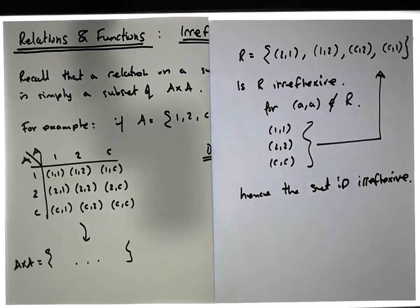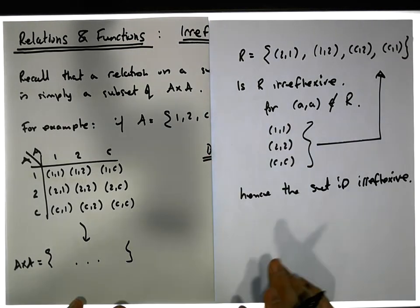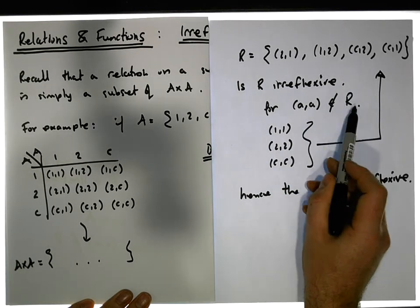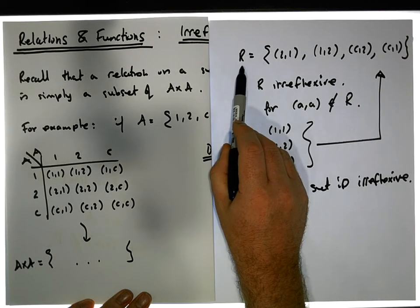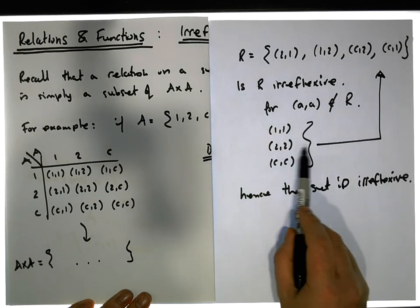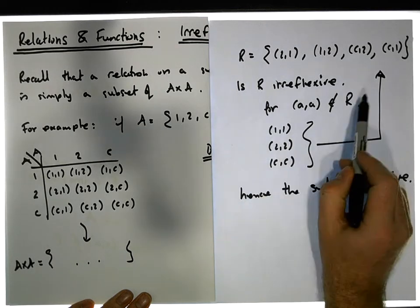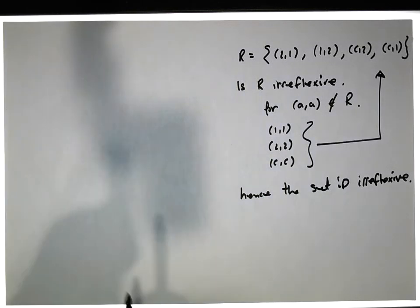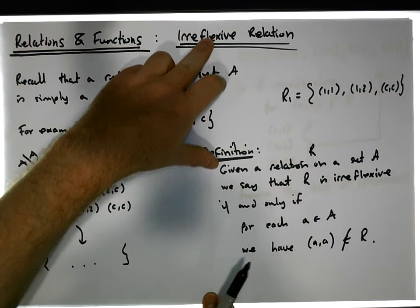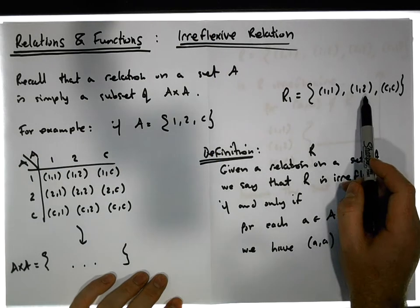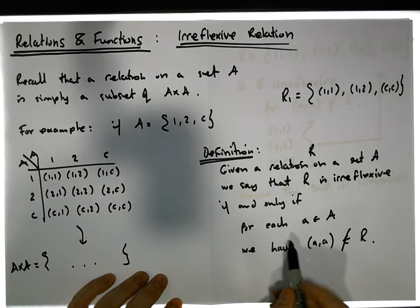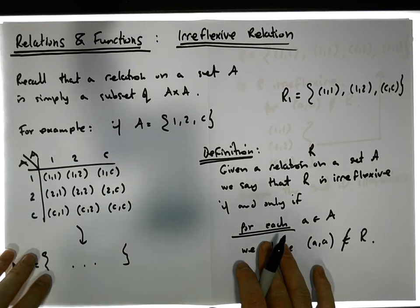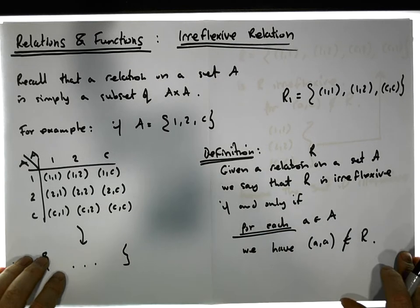This is in contrast to the concept of reflexivity. For a relation to be reflexive, all of the pairs (a,a) have to be in the relation. So for relation R to be reflexive, we would need (1,1), (2,2), and (C,C) all in there. For it to be irreflexive, they all need to be missing. In the first example, only one of them was missing — that doesn't make it irreflexive, because it has to be true for each and every element a in A.